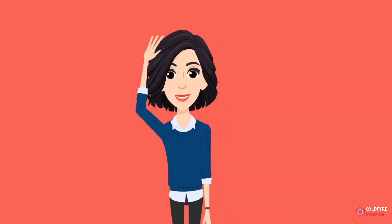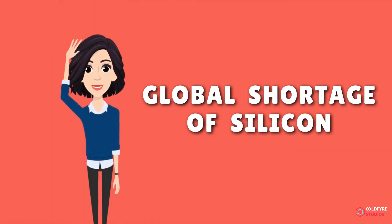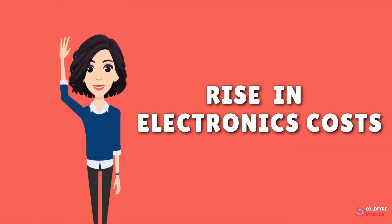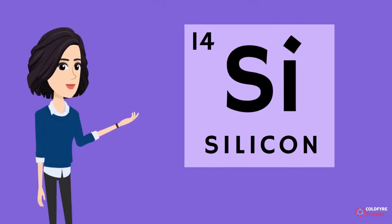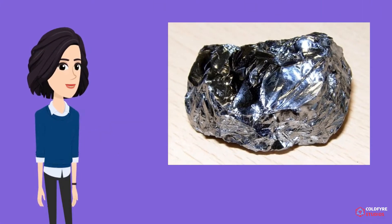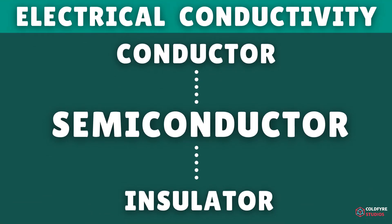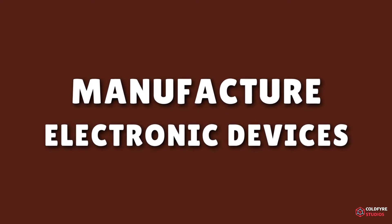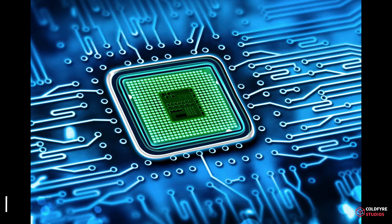Welcome back to the YouTube channel. Let's look at the global shortage of silicon and how it affects the price of electronics. Silicon is a chemical substance used as a semiconductor. Semiconductors have electrical conductivity between a conductor and an insulator, and they are used to manufacture various electronic devices including diodes, integrated circuits, and chips.